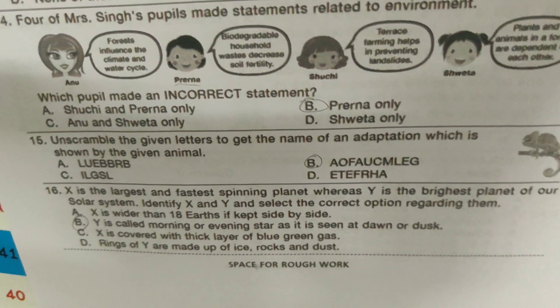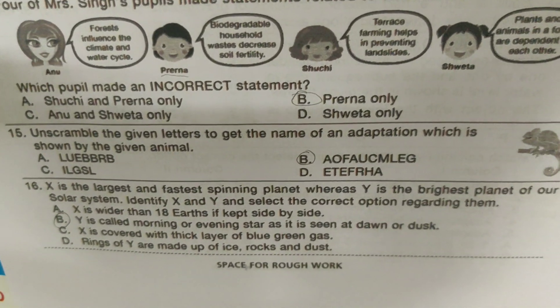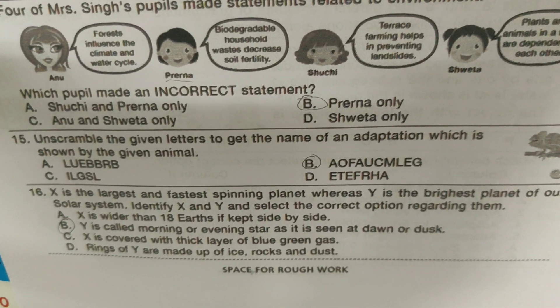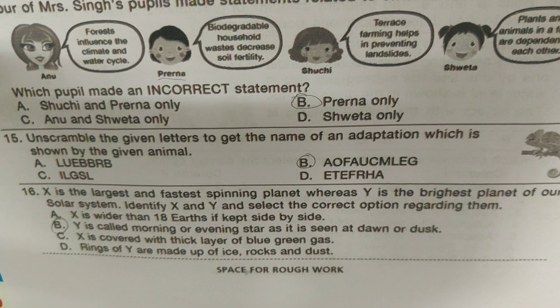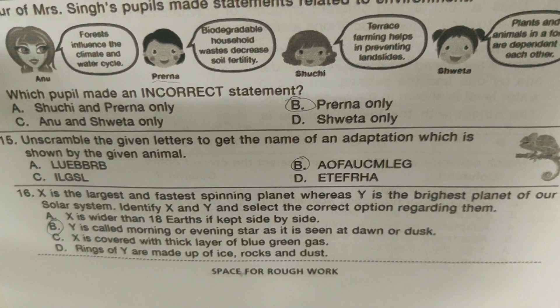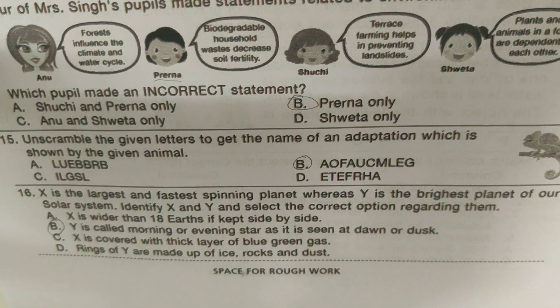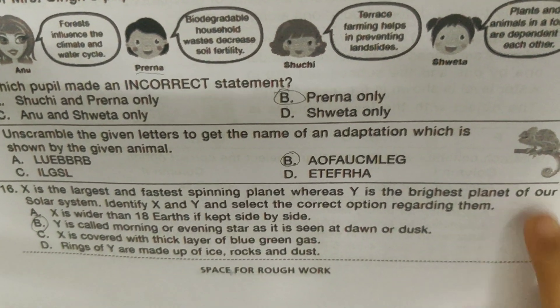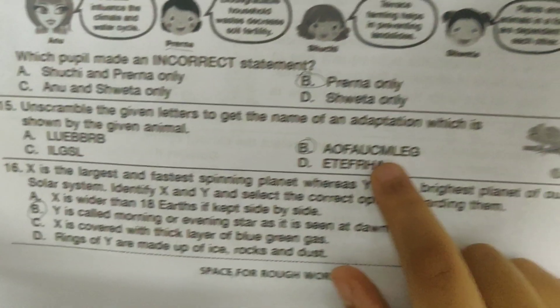Scramble the given letters to get the name of an adaptation shown by the given animal. It's a chameleon, and it camouflages.